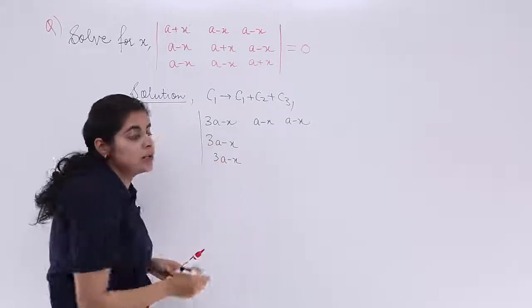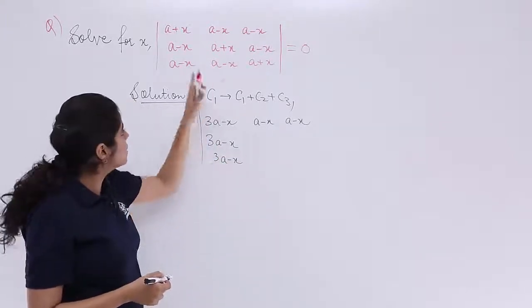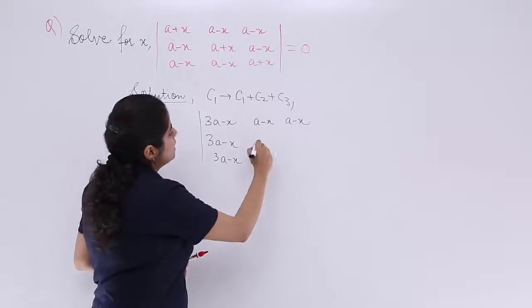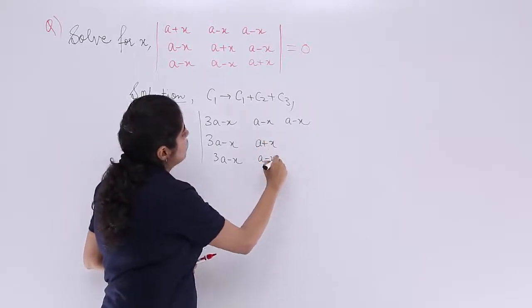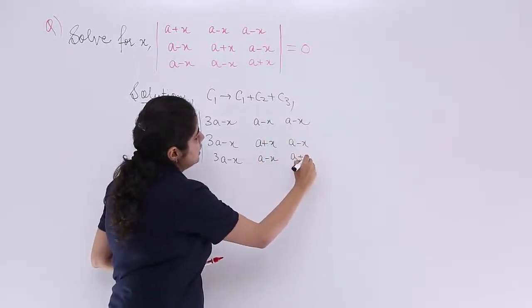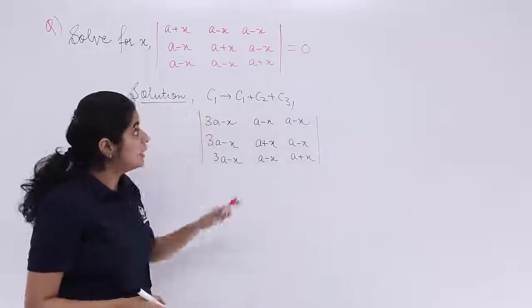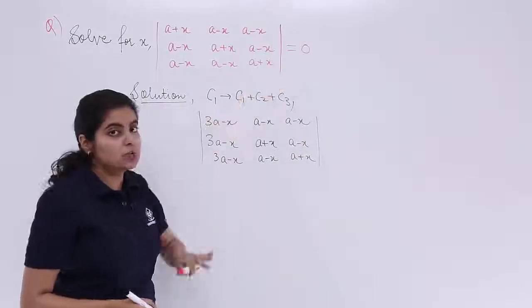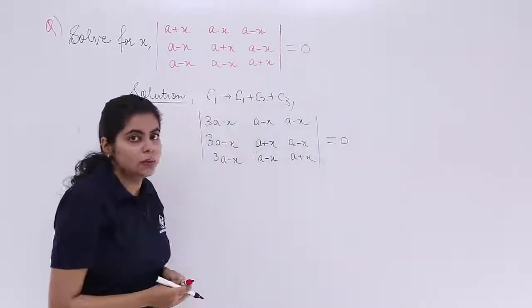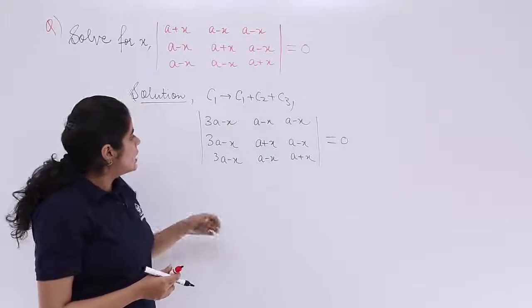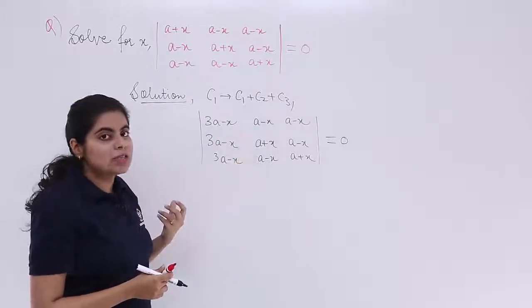The same applies for the first column in the third row. So we have (a + x), copied as is, then (a − x), (a − x), and (a + x) in the remaining positions. The determinant is already given equal to 0, so we set it equal to 0. Now 3a − x can be taken out as a common factor.